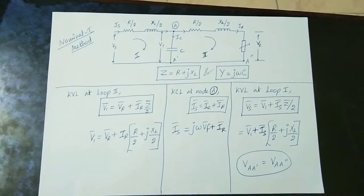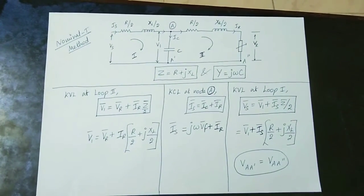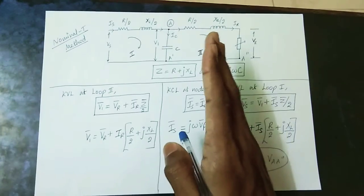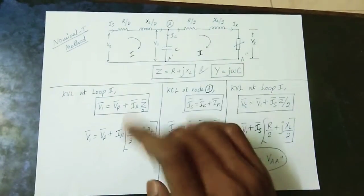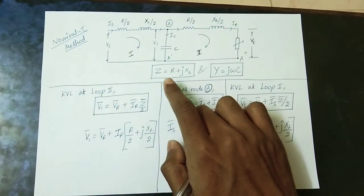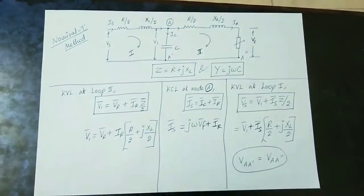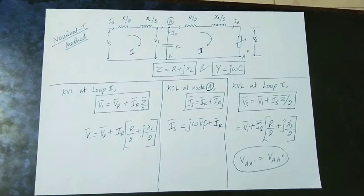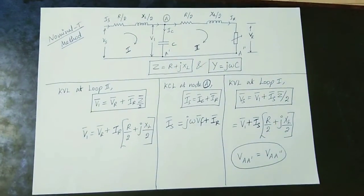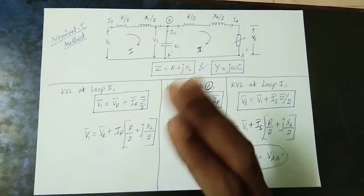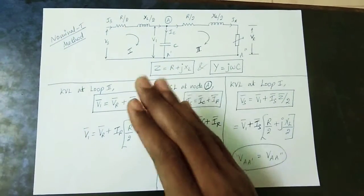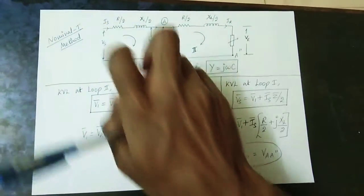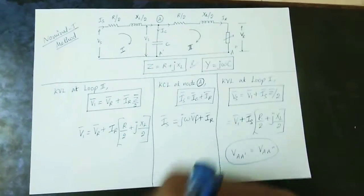In the nominal T method, the line impedance is represented as Z, where Z is equal to R plus jX. This is the basic formula. The impedance is split into two halves — Z/2 on each side — giving us two equal parts.